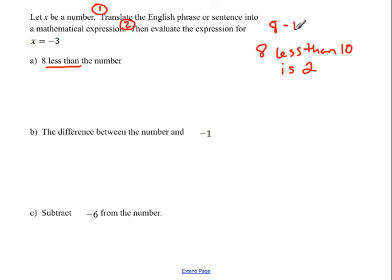Because if we do eight minus ten, eight minus ten would be negative two. Right? Because eight plus a negative ten, that would give us negative two. That's not going to work for us. When we think about eight less than ten, we start with ten and then we take eight away from it.